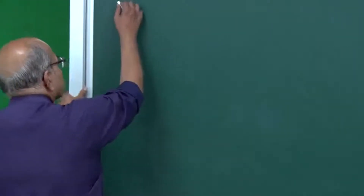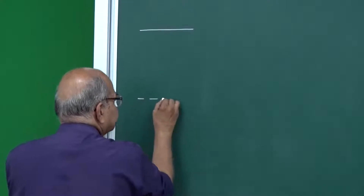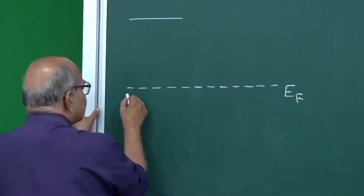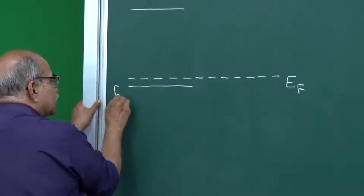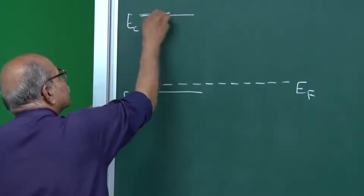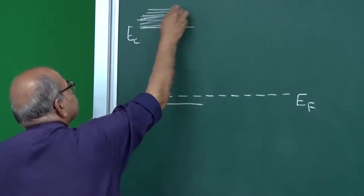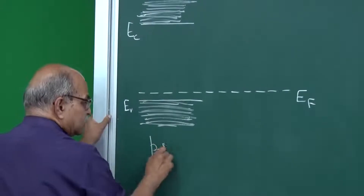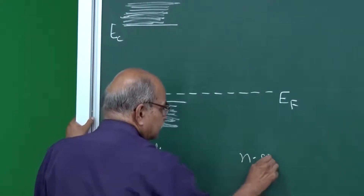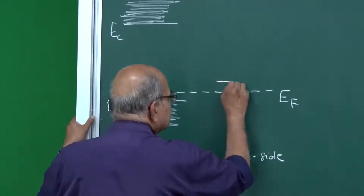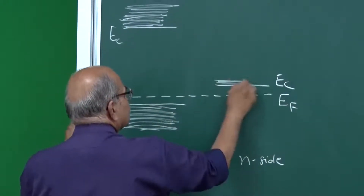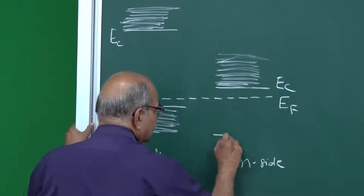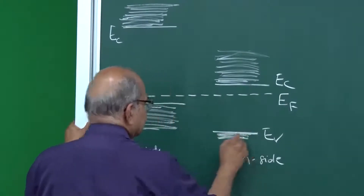The band looks like this. Suppose you have this Fermi function - we introduced the concept of Fermi energy EF. For the p side, this Fermi energy is close to the valence band edge, and the conduction band edge is here. These quantum states correspond to all those conduction band energies, and these quantum states are in the valence band. For the n side, the Fermi energy is close to the conduction band, so EC is here with all these conduction band quantum states, and EV with valence band quantum states.